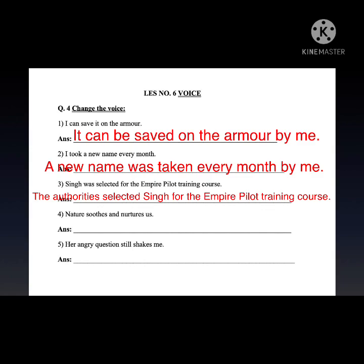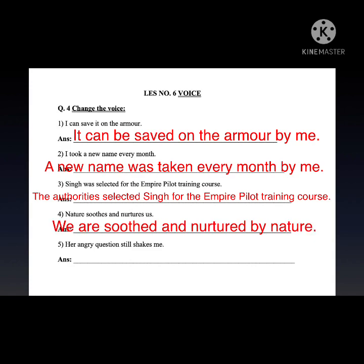'Nature soothes and nurtures us.' 'Nature' is the subject, 'soothes and nurtures' is the verb, 'us' is the object. Bring the object first — 'us' becomes 'we.' Make V3 of the verbs: 'are soothed and nurtured.' Add 'by' and bring the subject at the end. Answer: 'We are soothed and nurtured by nature.'